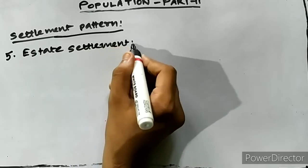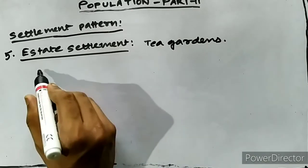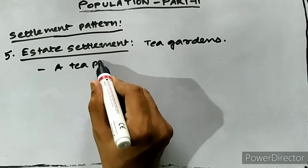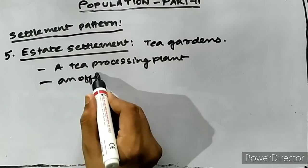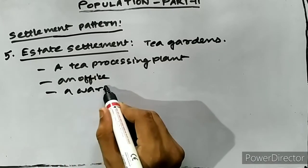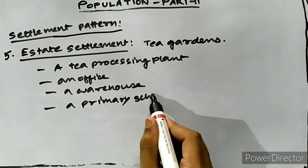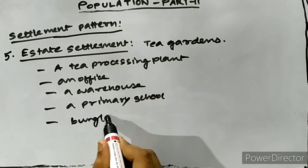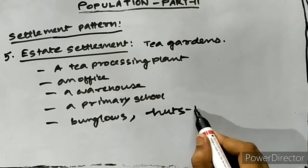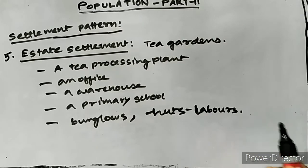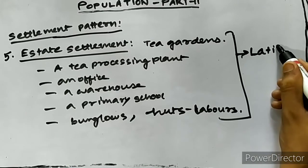The next important settlement is the estate settlement pattern, found in the tea garden areas. A tea garden contains a large tea processing plant, an office, a warehouse, a primary school, a dispensary, bungalows, and rows of huts for laborers. Such a compact and regulated arrangement of homesteads represents the estate settlement, also called the latifundian settlement.